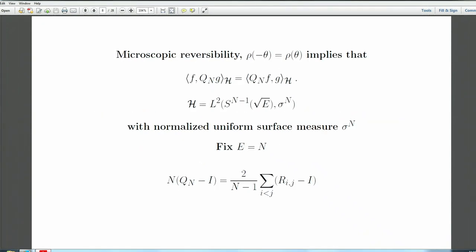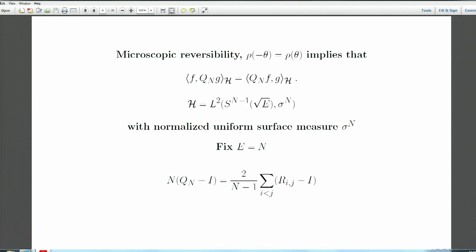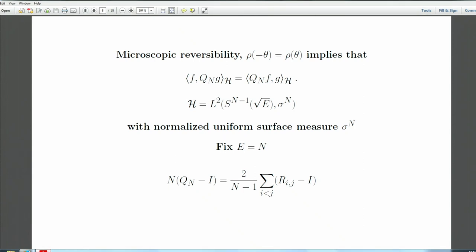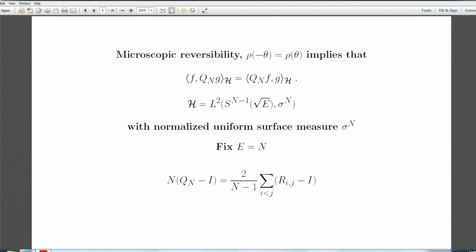In some sense you could forget everything told so far and just concentrate on that — that's where all the mathematics is. Microscopic reversibility lets us work in the Hilbert space L²(sphere, σ_n), where σ_n is the uniform probability measure on the sphere. We fix energy E = n, which is reasonable because we assume each particle has average energy 1 per particle.